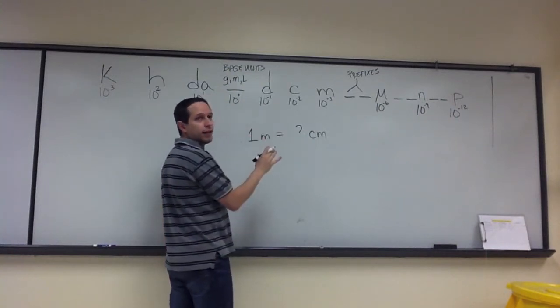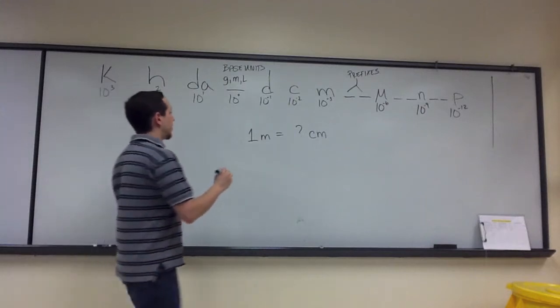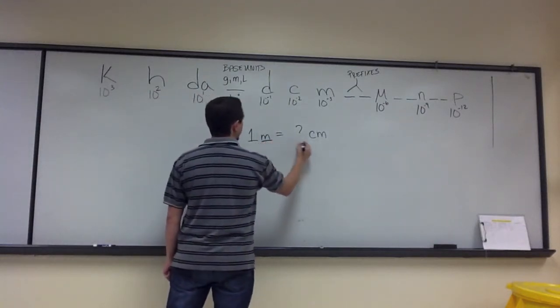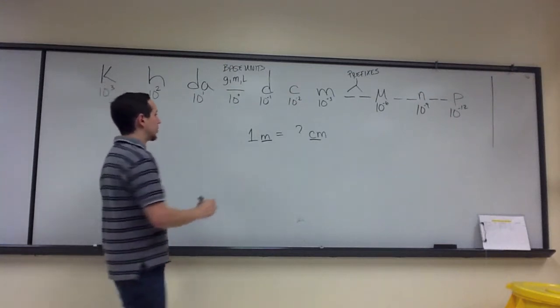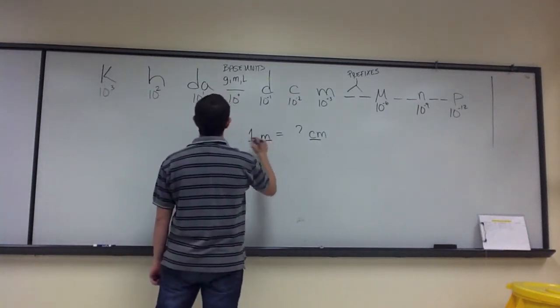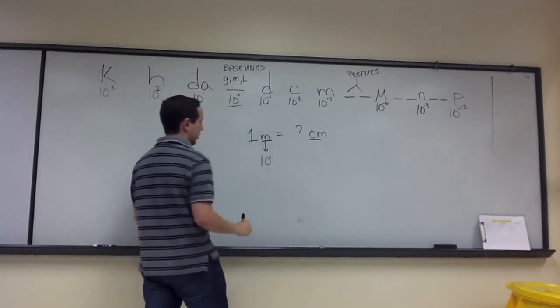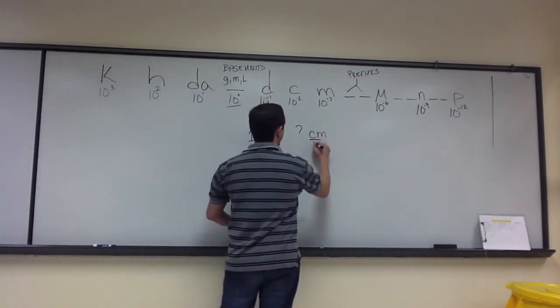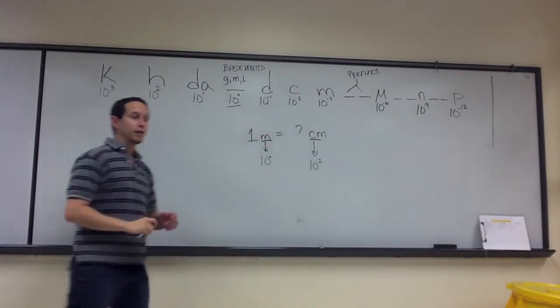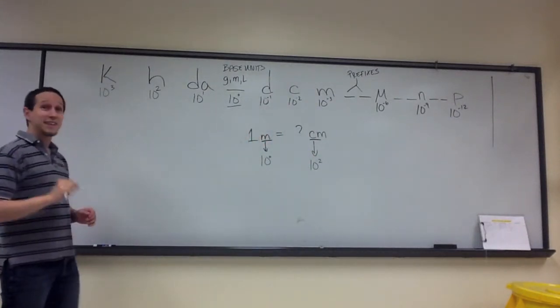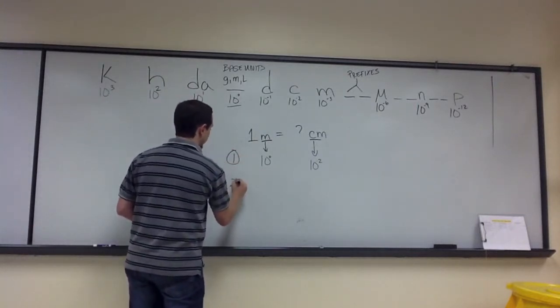To do this numerically and mathematically, what you'll do is first you will identify the numeric value that corresponds to each of your prefixes. So, in this particular instance, I'm using the base unit, which corresponds to 10 to the zero, and I'm converting to centi, which represents and corresponds to 10 to the negative two. The next thing you're going to do, so this is step one, step two.